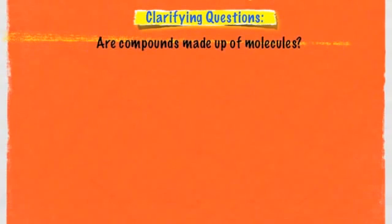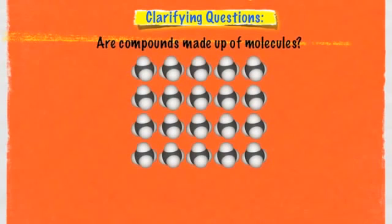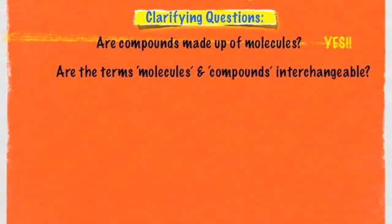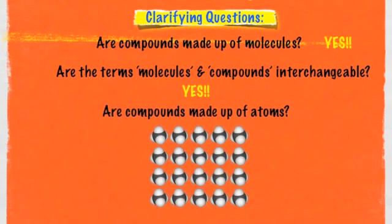Here are some clarifying questions about the similarities and differences between molecules and compounds. Are compounds made up of molecules? There's that compound — if we remove the smallest component of it, yes, that's a molecule. So compounds are definitely made up of molecules. Are the terms molecules and compounds interchangeable? Yes, just like atoms and elements are — molecules and compounds can be used interchangeably. But remember, a molecule is the smallest component of a compound that still has the same properties of that compound. Are compounds made up of atoms? Let's take a look at that.